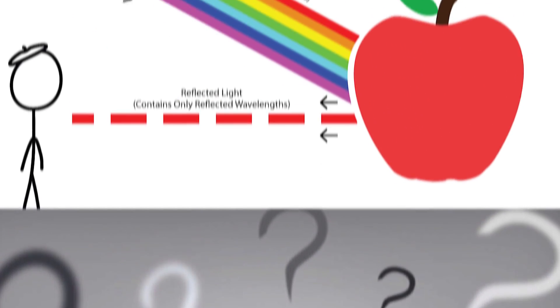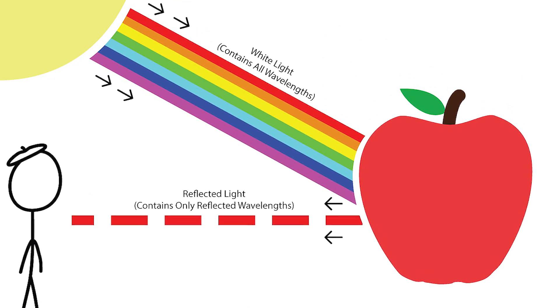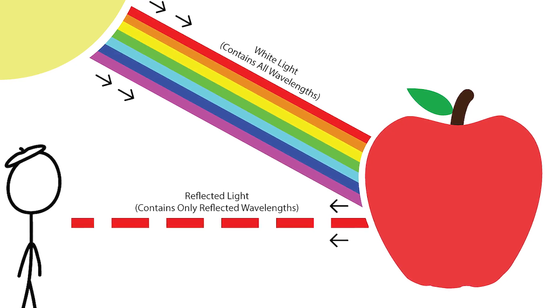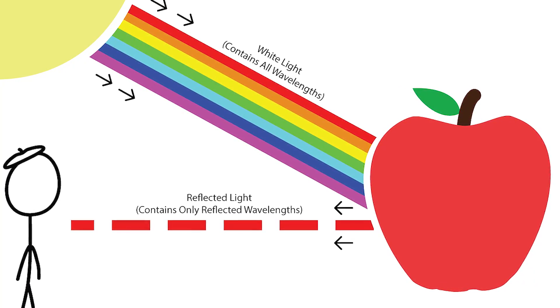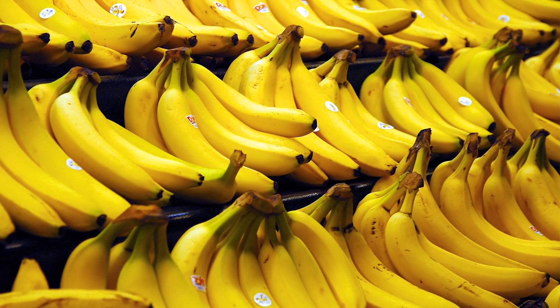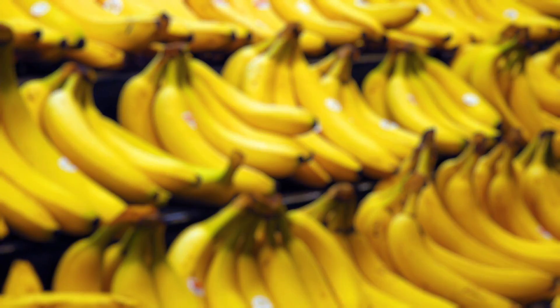But first, have you ever wondered why humans see different colours? The answer, quite frankly, is to do with what reflected colours you see. For example, take a banana — we know that is yellow. The surface of the banana is reflecting the wavelengths that we see as yellow and absorbing the rest.